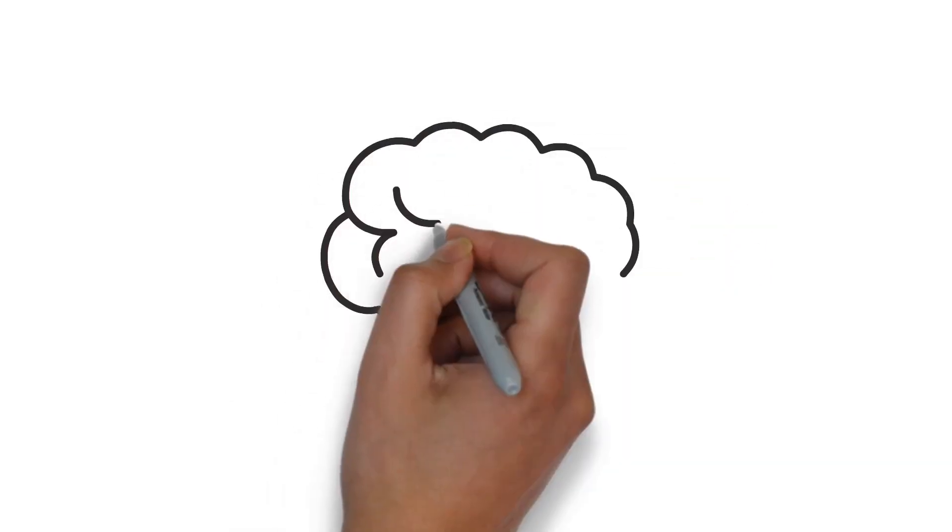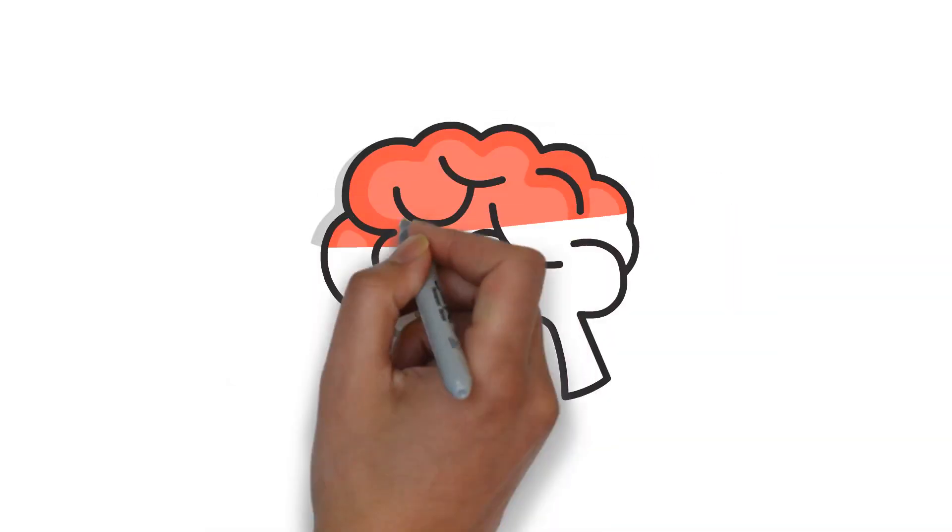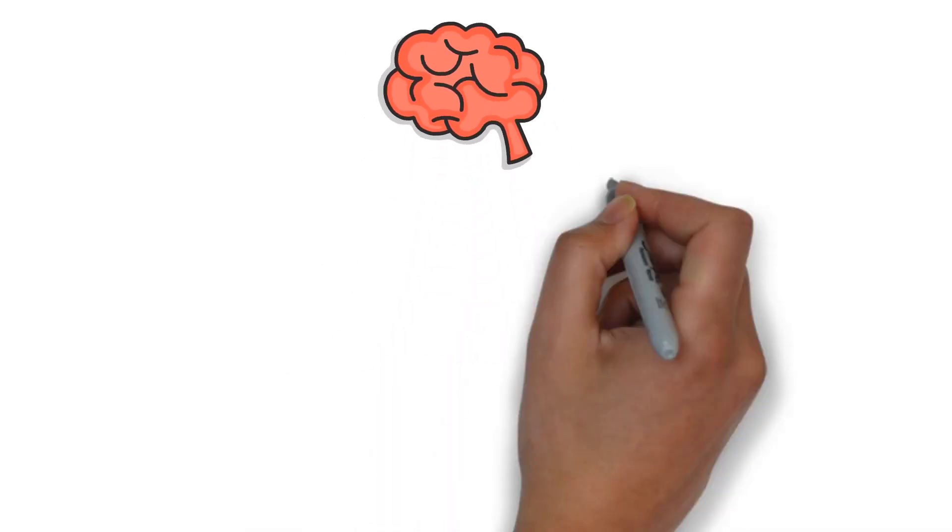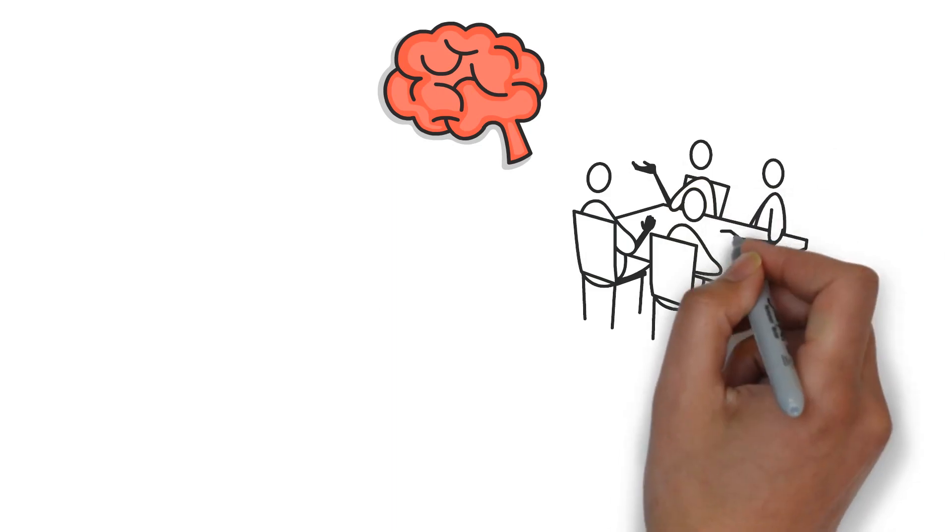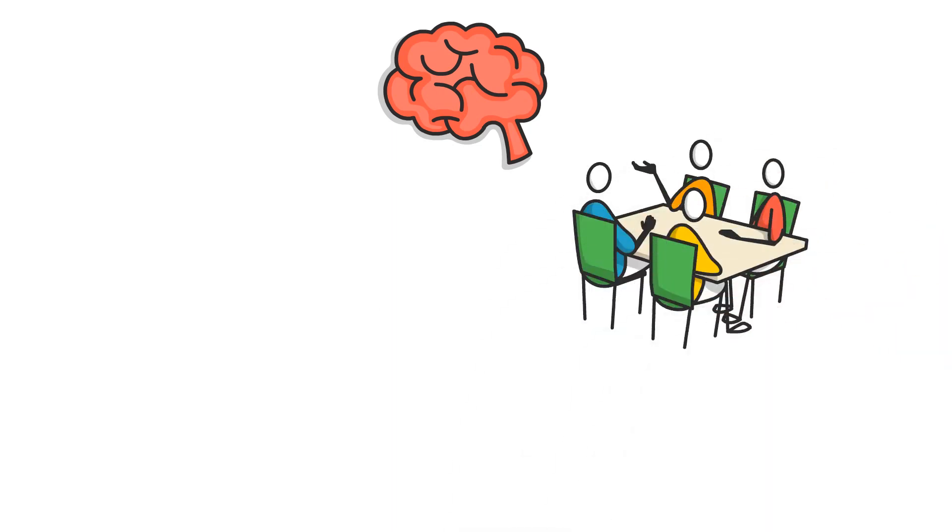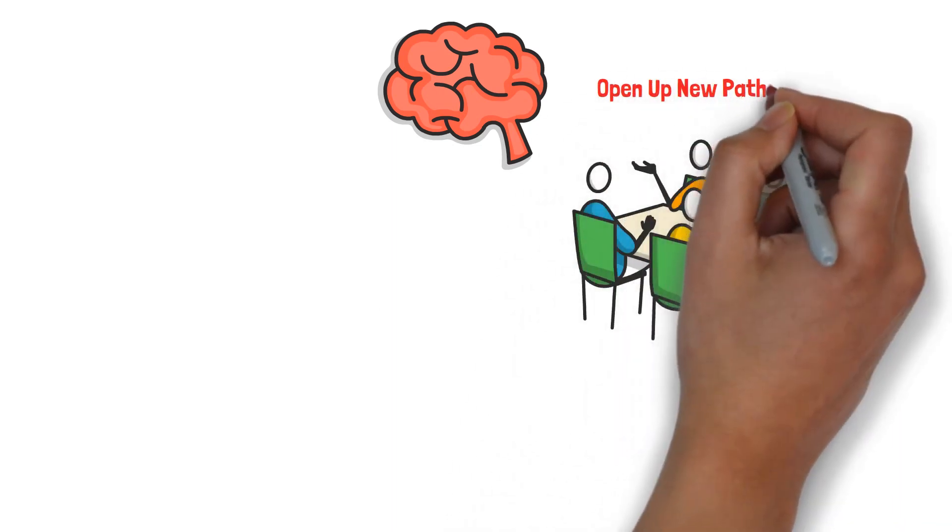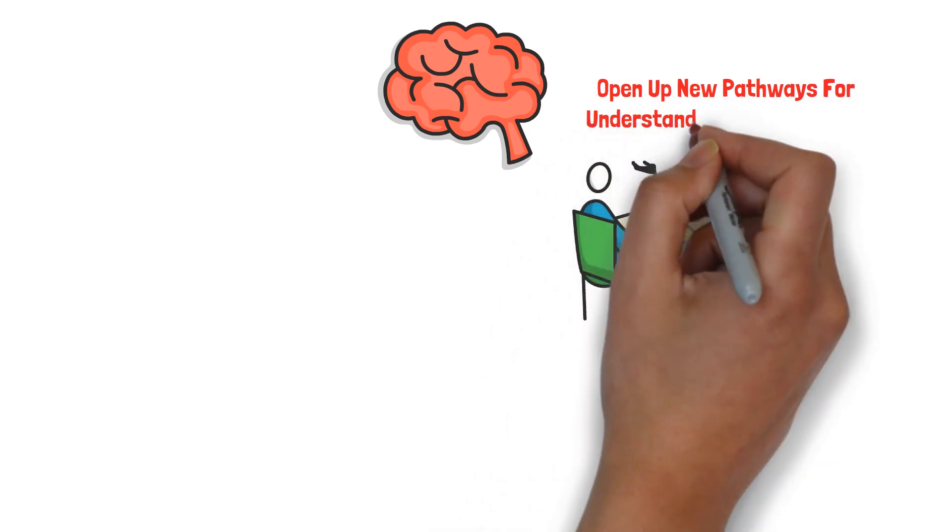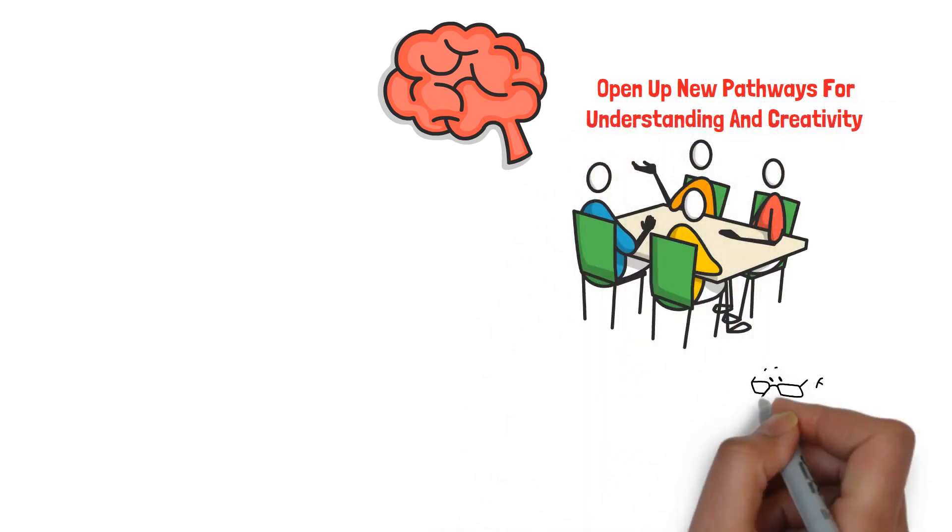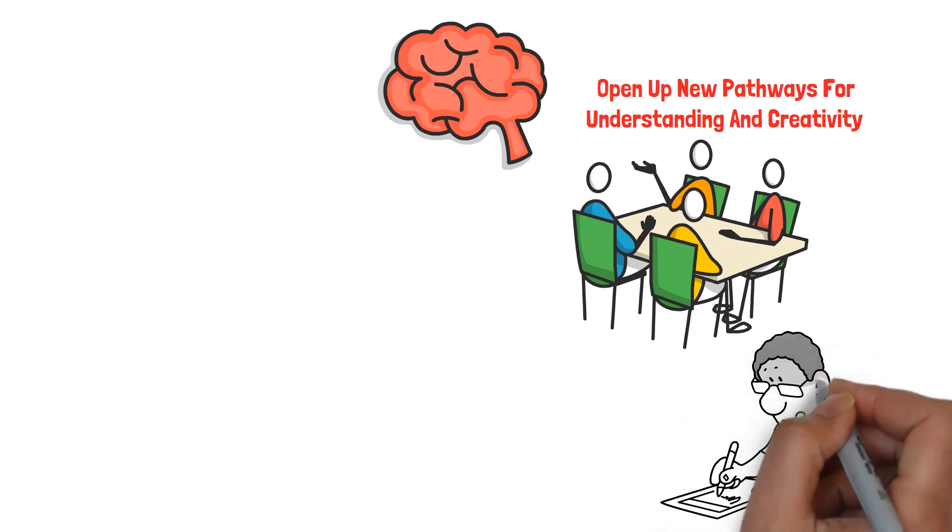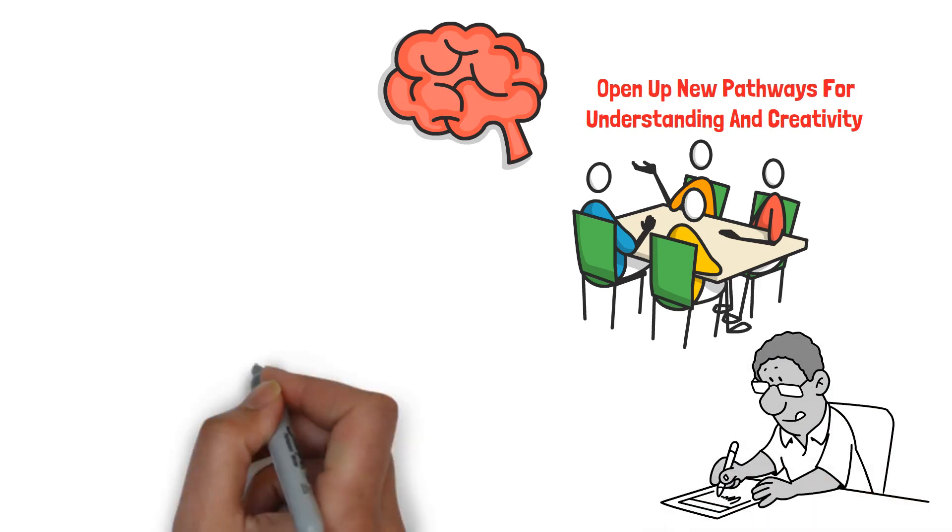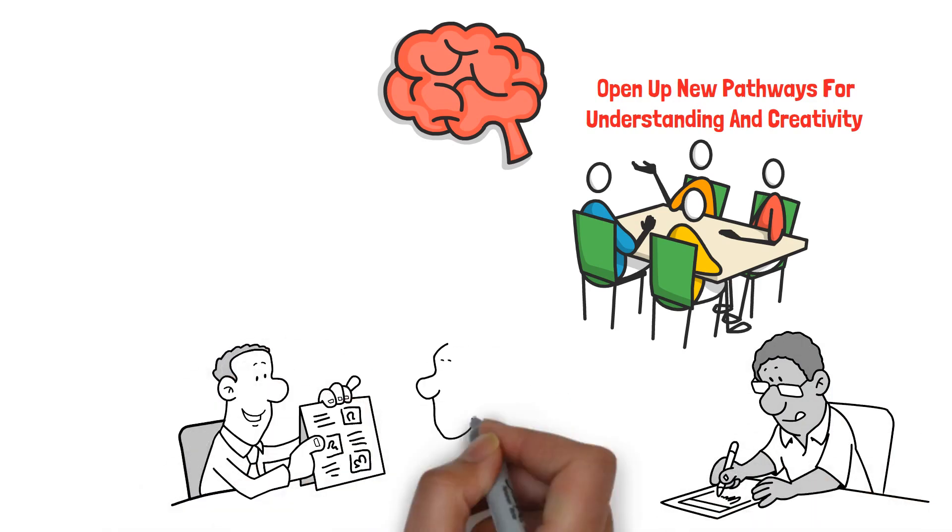Now for a powerful bonus tip, the use of metaphorical thinking to skyrocket your problem-solving and idea generation capabilities. Metaphorical thinking involves making connections between seemingly unrelated concepts or visualizing problems as physical objects. This approach can open up new pathways for understanding and creativity. When you engage in metaphorical thinking, you reframe the issue at hand in a way that's not only unique, but also significantly broader in scope. This allows for the integration of new and diverse ideas that standard logical thinking might miss.